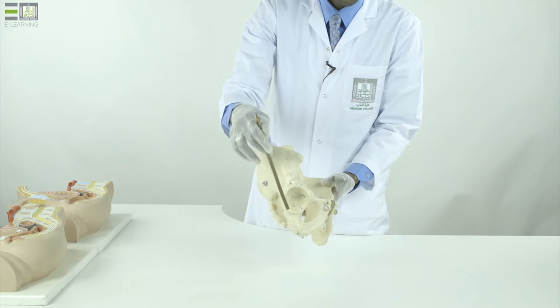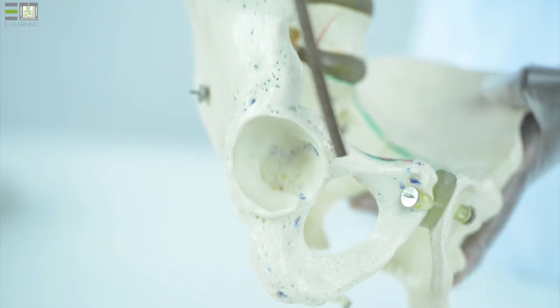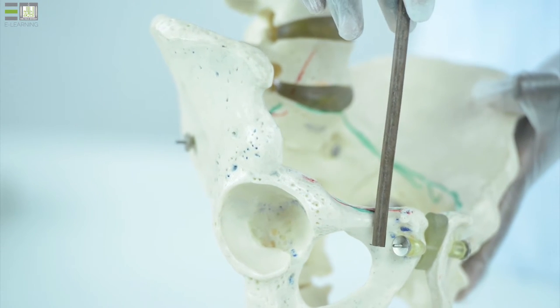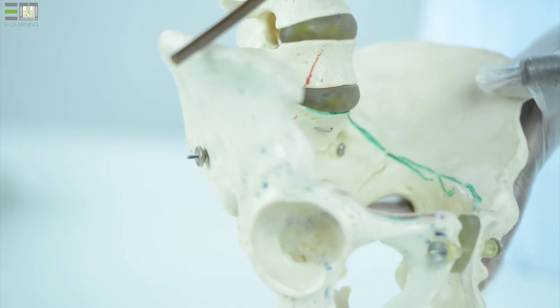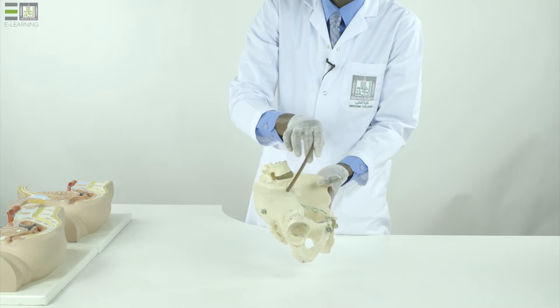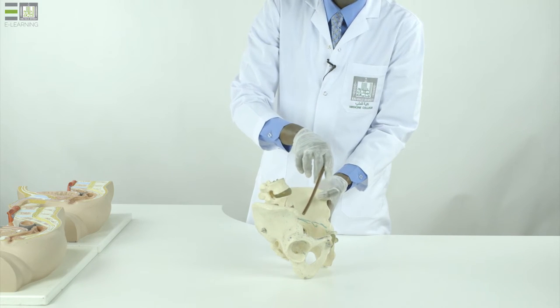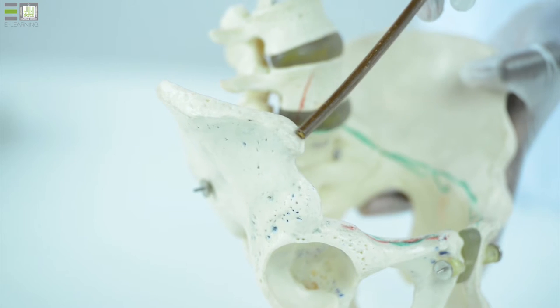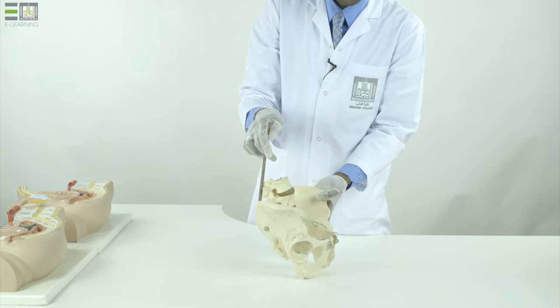ilium above, ischium below and posterior, and pubis below and anterior. The ilium is marked by the iliac crest, extending from the anterior superior iliac spine to the posterior superior iliac spine.